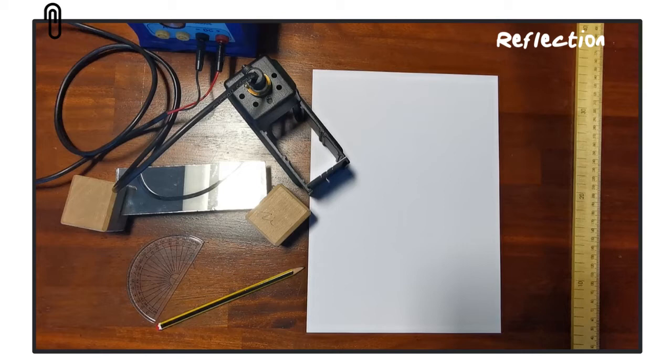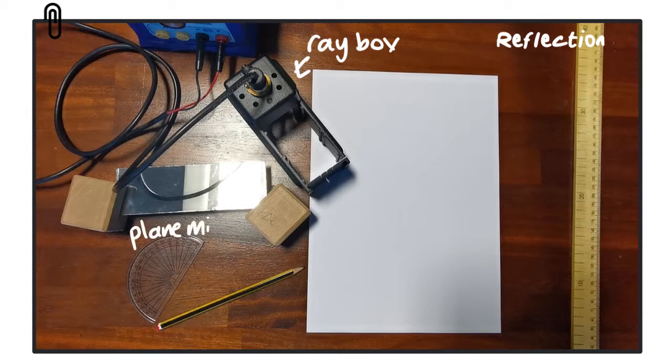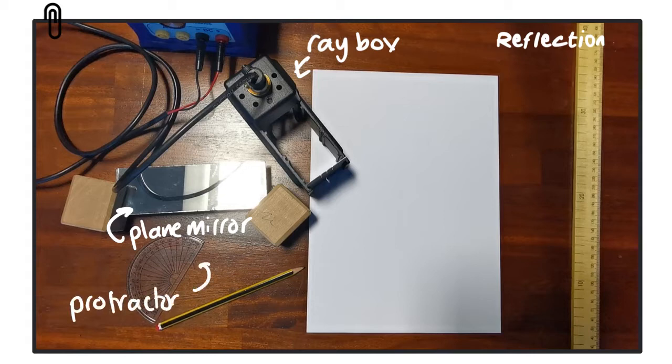There's a few bits of apparatus that we're going to need for this. First of all we need a ray box, which is our source of light. We also need a plane mirror - the plane here just means that it's a flat mirror - and there's a couple of wooden blocks as well just to help keep that straight. We will need a protractor since we're going to be measuring some angles, a pencil, and a ruler.